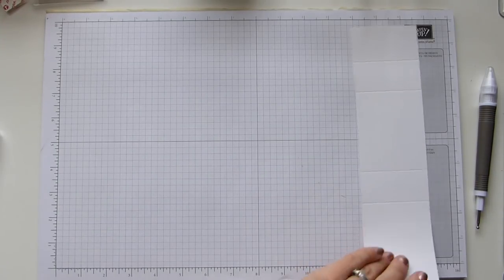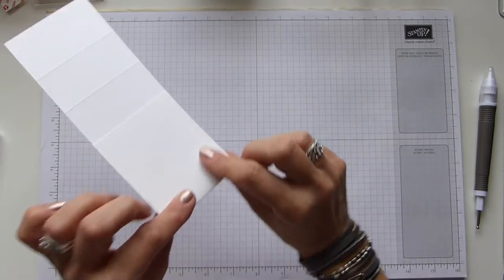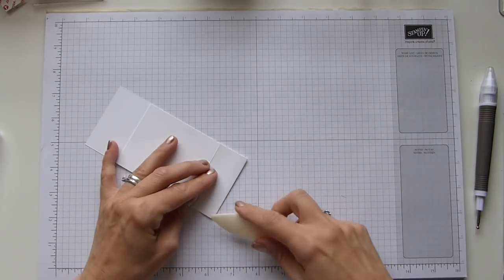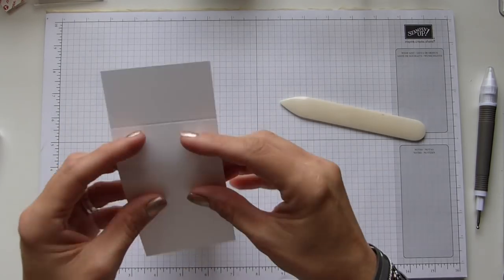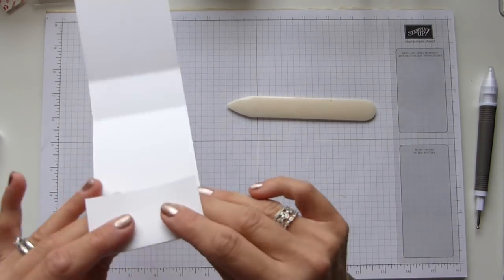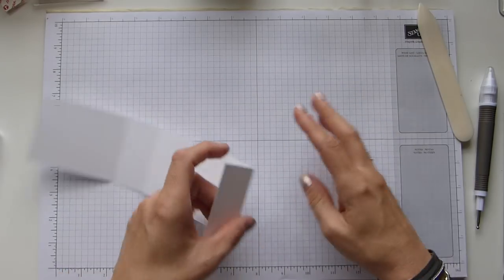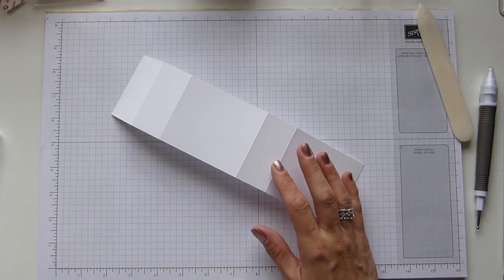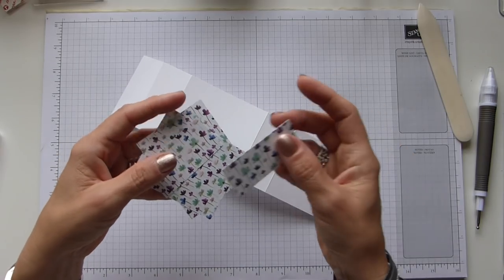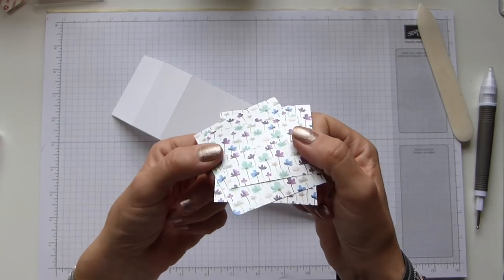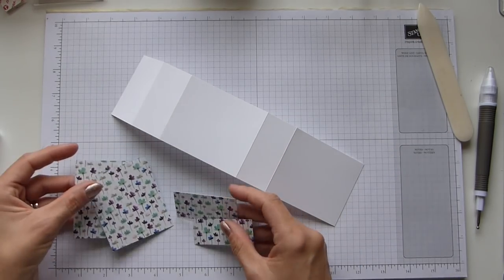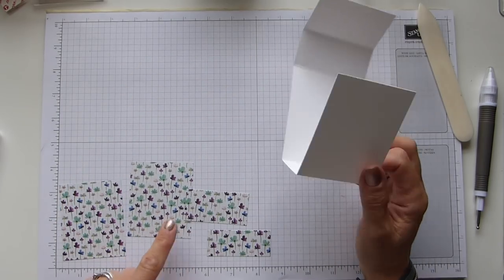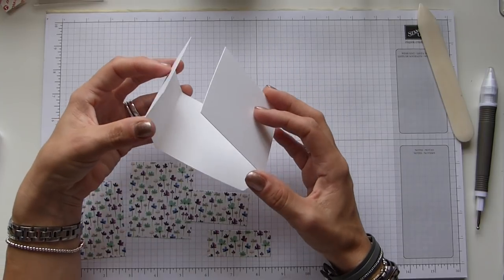Very simple. Move that to one side and then it's just a simple case of fold and burnish the score lines. We need to be adding some DSP before we get too carried away, because I always forget.